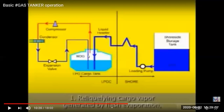Tank pressure will also increase and temperature will not be maintained. So to avoid the loss of cargo in vapor form and to keep tank pressure and temperature in control, we reliquefy this boil-off vapor gas. For reliquefying, we take the gas through the reliquefaction plant — a simplified version with only three basic steps. First, the gas is compressed.